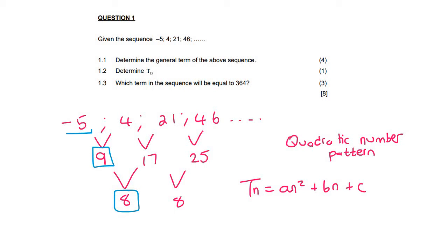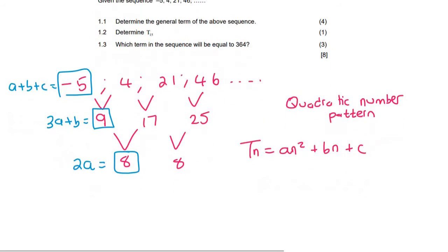And I say that 2A is equal to this one, 3A plus B is equal to this one, and then A plus B plus C is equal to this one. That is a mathematical property that we can always use.